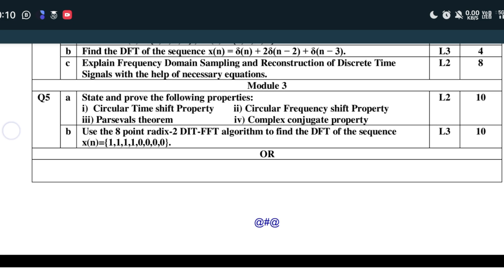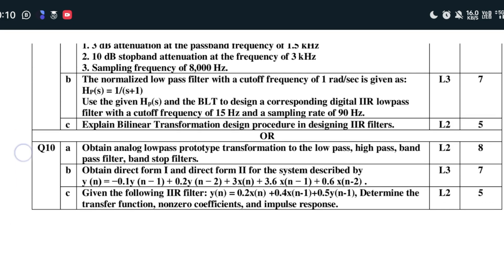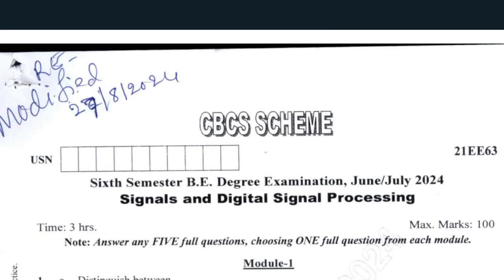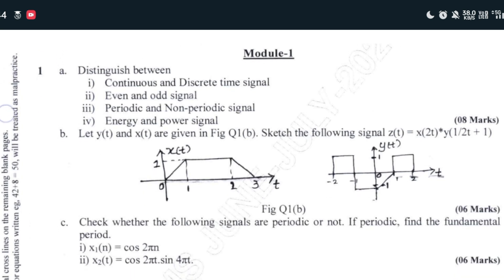Step 2: Gather Essential Resources. Collect all the necessary materials, including Model Question Papers for EC Branch, Previous Year Question Papers for EEE Branch, and Notes for All Modules.